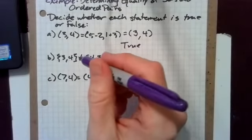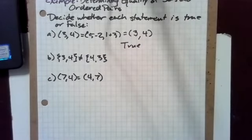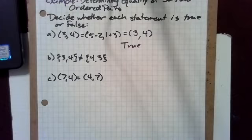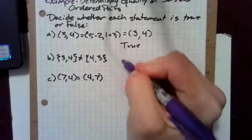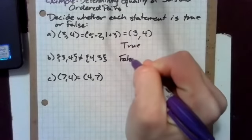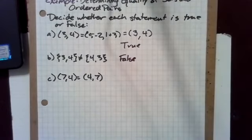Next, true or false: the set {3,4} is not equal to the set {4,3}. And this is false, because we stated before that the order doesn't matter when we're looking at sets.